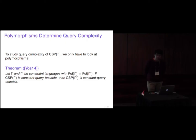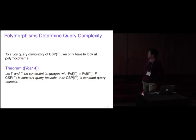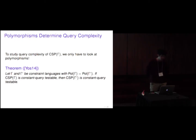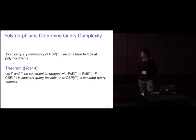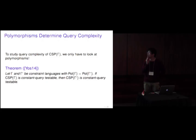A crucial property is the following: to study the query complexity of CSP(gamma), we only have to look at polymorphisms. Let gamma and gamma-prime be constraint languages with the same polymorphism set. Then if one of them is constant query testable, the other is also constant query testable. So in order to characterize constant query testable gamma, we only have to look at polymorphisms.